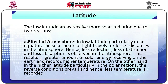Low latitude areas receive more solar radiation due to two reasons. First, effects of atmosphere: in low latitudes, particularly near the equator, the solar beam travels for lesser distances in the atmosphere. Hence, less reflection, less obstruction, and less absorption is observed. This results in a greater amount of solar energy reaching the earth and records higher temperature. On the other hand, in higher latitudes, particularly in the polar region, the reverse conditions prevail and hence less temperature is recorded.